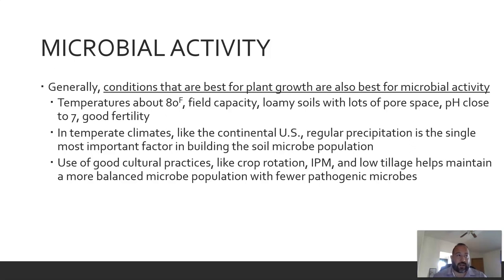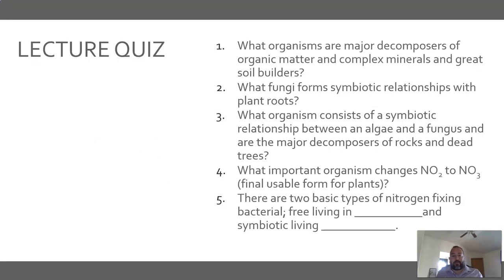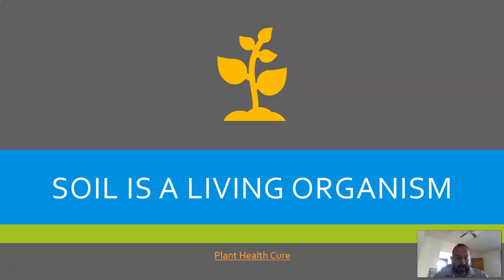Good cultural practices like crop rotation, integrated pest management, and low- or no-till conservation tillage help maintain a balanced microbial population. When microbes have what they need, they're very helpful to soil. When conditions are poor, pathogenic microbes can outnumber helpful ones and cause problems. Healthy soil conditions keep microbes happy and productive, while conditions poor for plant growth can tip the balance toward pathogens.